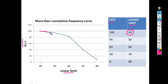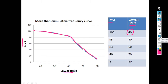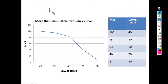Join all the points using a straight line. The diagram is incomplete because we have to extend this line to the y-axis, where the frequency of that point is 0. For more than cumulative frequency, we require lower limit on the x-axis and MCF on the y-axis. For less than cumulative frequency, we require upper limit on the x-axis and LCF on the y-axis.